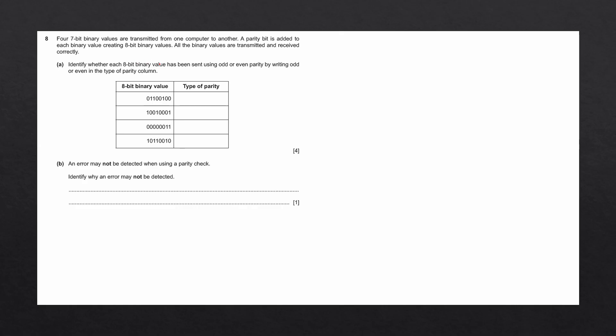Identify whether each 8-bit binary value has been sent using odd or even parity by writing odd or even in the type of parity column. So to complete this table, we're going to figure out if we're using odd or even parity with this 8-bit binary value.